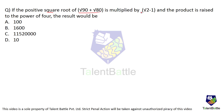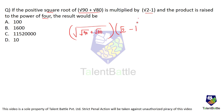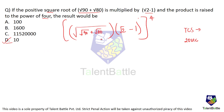The positive square root of (√90 + √80) is multiplied by (√2 − 1), and the product is raised to the power of 4. TCS provides you a virtual calculator — use it and get the answer in about 20 seconds. Do not waste time trying to simplify this. Using the calculator, you get an approximate answer of 9.87, which is approximately 10. The answer is option D, which is 10.